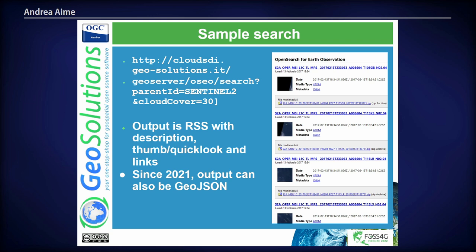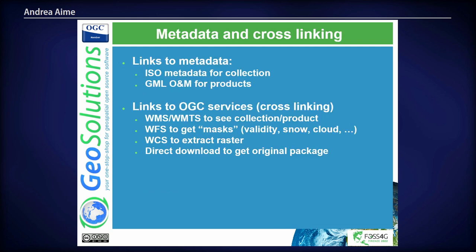The output is typically an RSS feed, which nowadays is a little bit outdated. Since 2021, you can also get GeoJSON output with much of the same information. Typically the output has lots of links, which is common to the STAC API. The RSS would not contain much information, but it would link to a metadata sheet in ISO or GML Observations and Measurements to describe the collection or the product. Interestingly, it would also link to OGC services to consume the data — WMS or WCS — so an OGC protocol that you could use to look at and download the data.